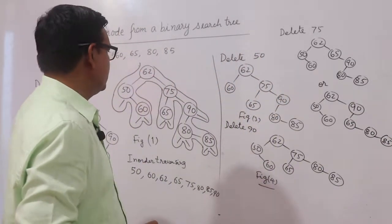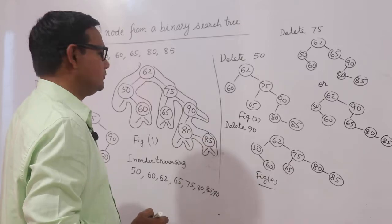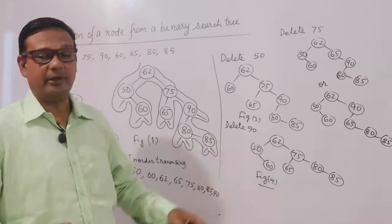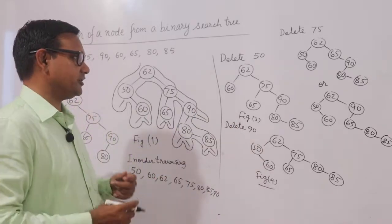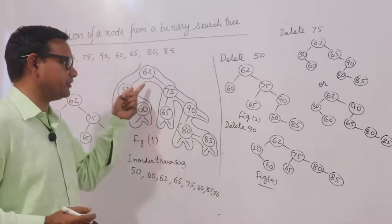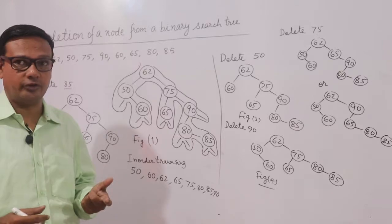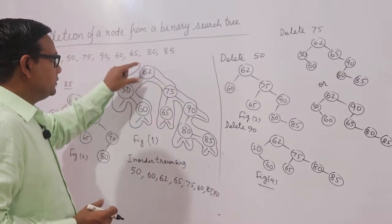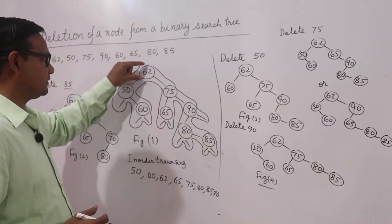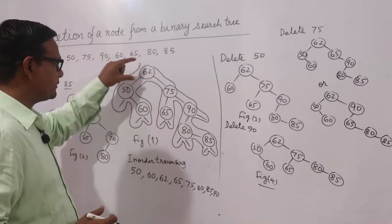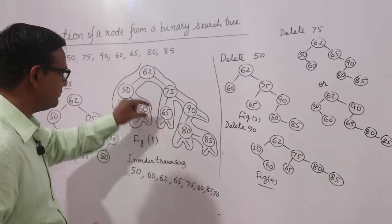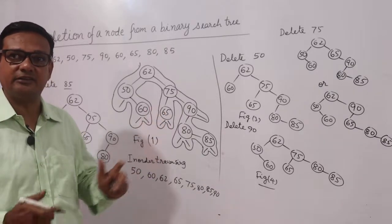In this way we delete elements from a binary search tree. If I had to delete the root node — here the root node is 62 — its in-order predecessor is 50, so I can replace 62 by 50, or its in-order successor is 65, so I can replace it by 65.